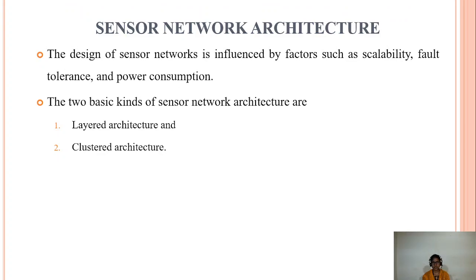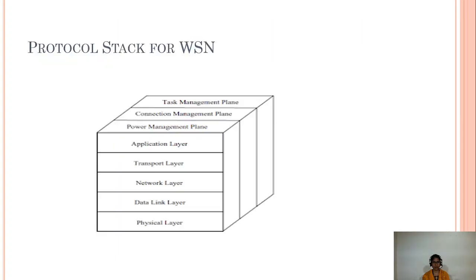Next we will discuss sensor network architecture. The design of sensor networks is influenced by factors like scalability, fault tolerance, and power consumption. Two basic kinds of sensor network architectures are layered architecture and clustered architecture. Before discussing these architectures, we need to see the protocol stack for sensor networks. This protocol stack contains five layers and three management planes. The five layers are: application layer, transport layer, network layer, data link layer, and physical layer. The three management planes are: power management plane, connection management plane, and task management plane.